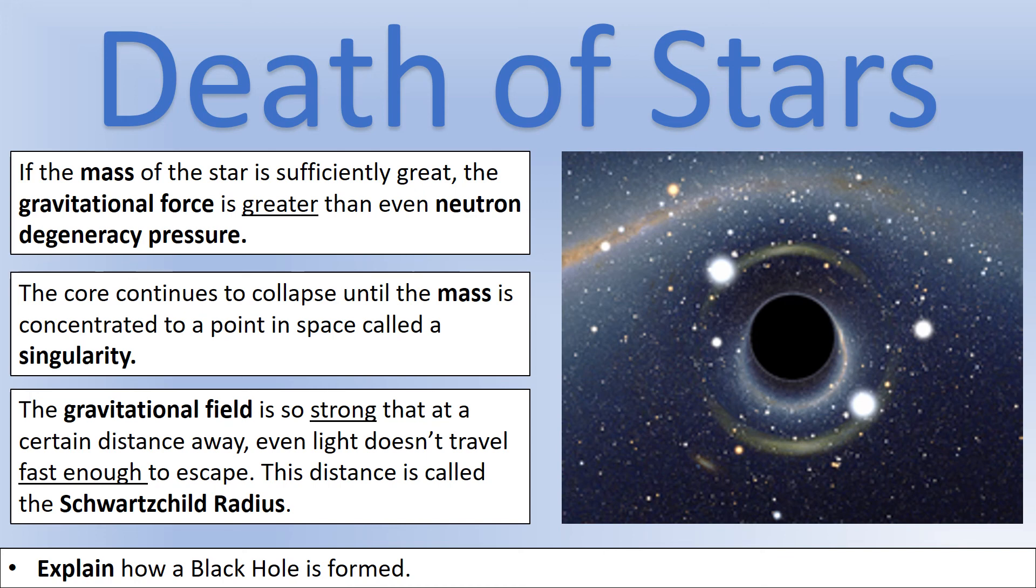So this point essentially forms a circle or a sphere, effectively, around the black hole. And that's called the event horizon, which you may have heard about with black holes.